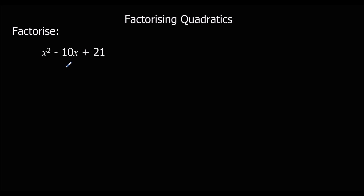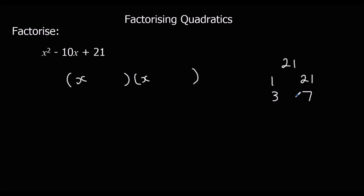Same thing again — we've got x, so we're going to have x in each bracket. Factors of twenty-one: one times twenty-one, three times seven — it's not in the four, five, or six times tables, so those are the only factors. How can I make minus ten? It's going to have to be three and seven, and it's going to be minus three, minus seven. I could check this — expand it and it should get me back to the original.